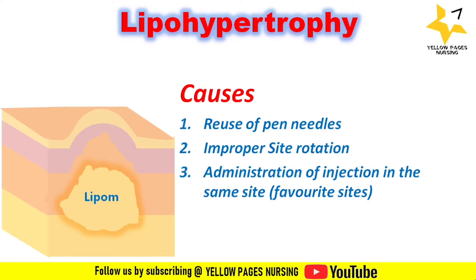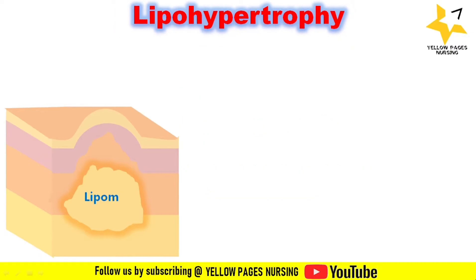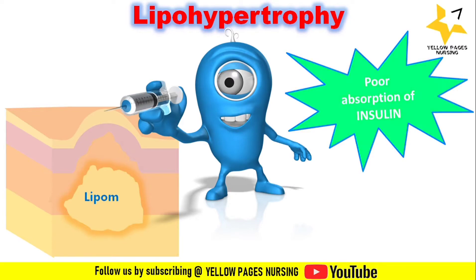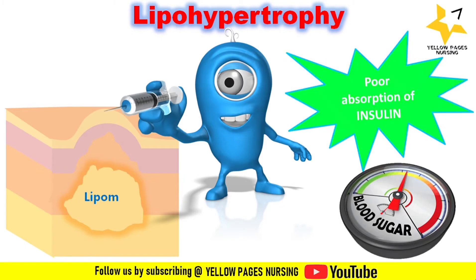Now, what happens if we administer insulin on the fatty lump area or a lipohypertrophy site? When we administer insulin on a lipohypertrophy site, there is poor absorption of insulin. This may lead to poor glycemic control — either hyperglycemia or hypoglycemia — and sometimes the patient may require more insulin.